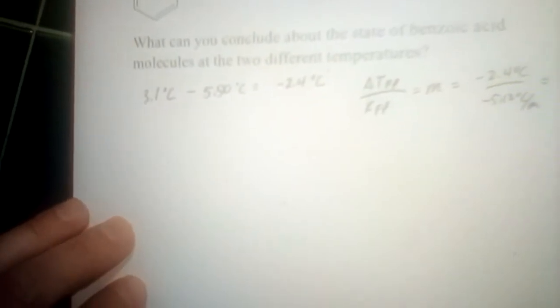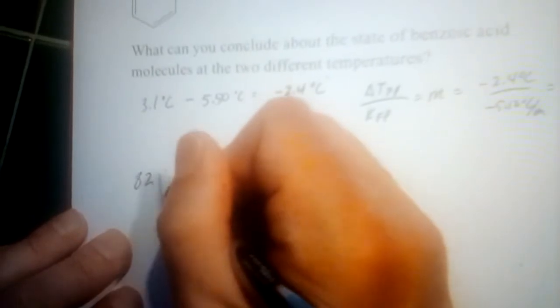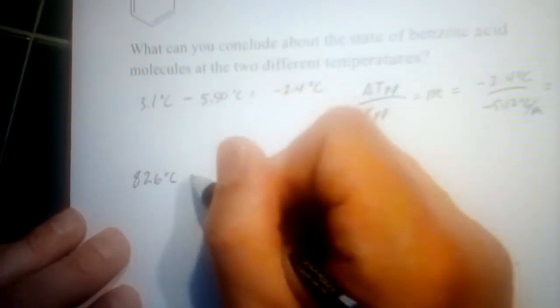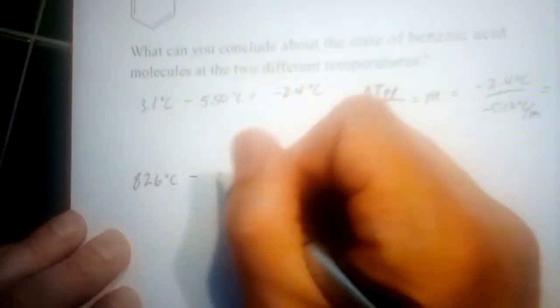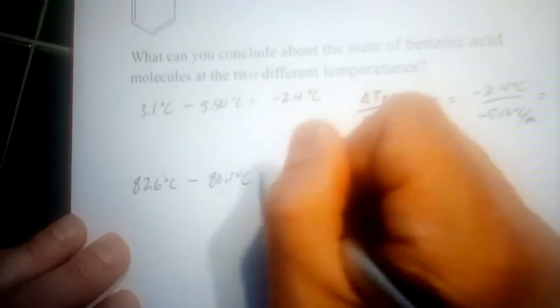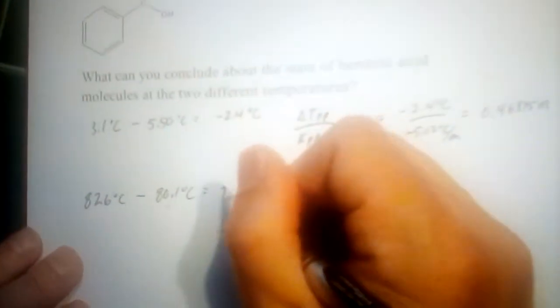That doesn't give us too much to go on yet. But let's see what happens with the boiling point. The boiling point of the solution is 82.6 degrees C, and the pure solvent is 80.1 degrees C. The change in boiling point is 2.5 degrees Celsius.